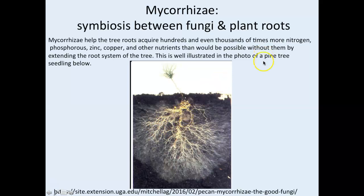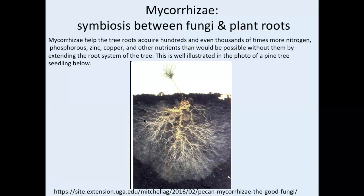That network of fungi is called a mycelium, and we'll talk about that at the end of the chapter. This is a symbiotic relationship between fungi and the plant. The mycorrhizae help the tree acquire hundreds and even thousands of times more nitrogen, phosphorus, zinc, copper, and other nutrients than would be possible without them.